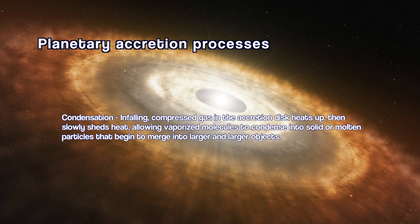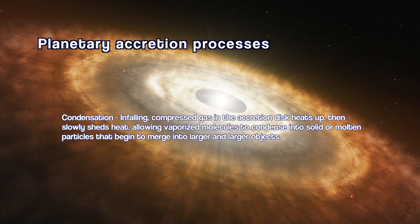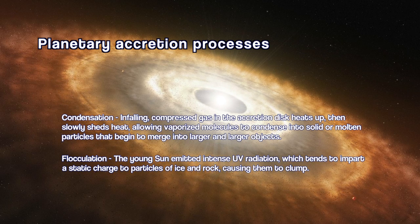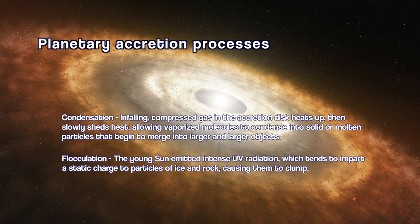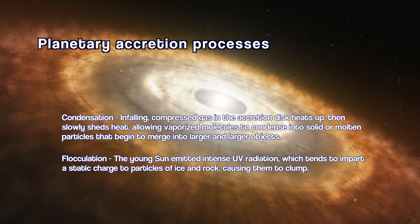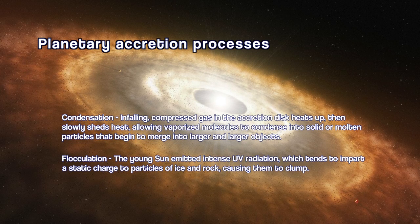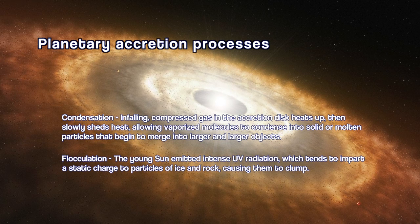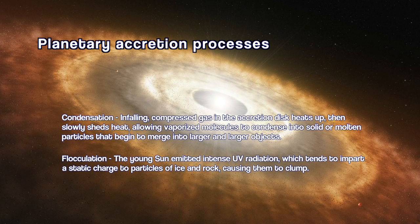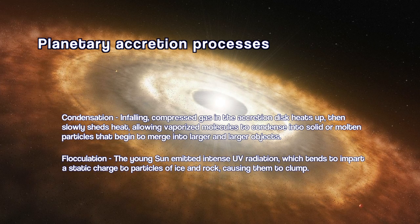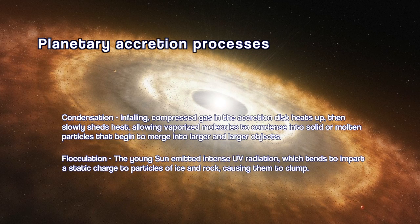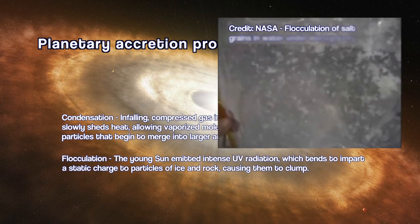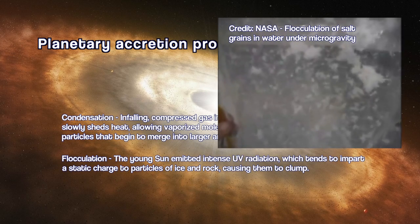And once you have these tiny particles, they can begin to associate with each other. They can begin to flocculate. And we think what happens is, at this point, the small particles are being bathed by ultraviolet light from the young Sun, and this will tend to impart a static charge to the particles. It can knock electrons out. It can ionize some of the atoms in that particle and impart to the surface of the particle an overall static charge. And like feathers sticking to a balloon with static charge, you can have these particles begin to clump together to form little loose associations of lots of particles clumping, flocculating together.